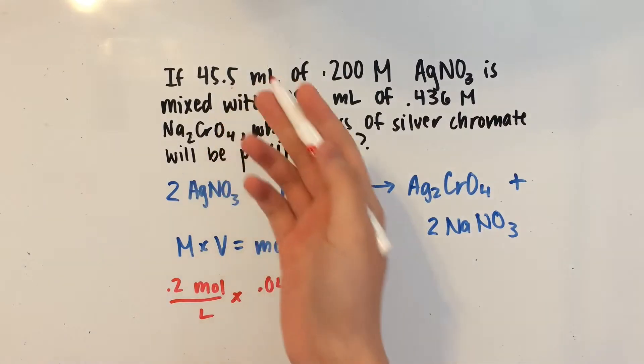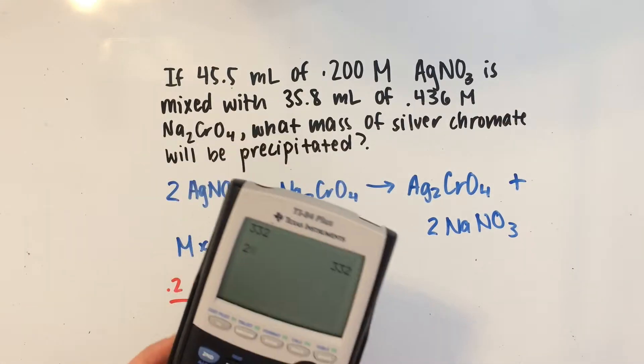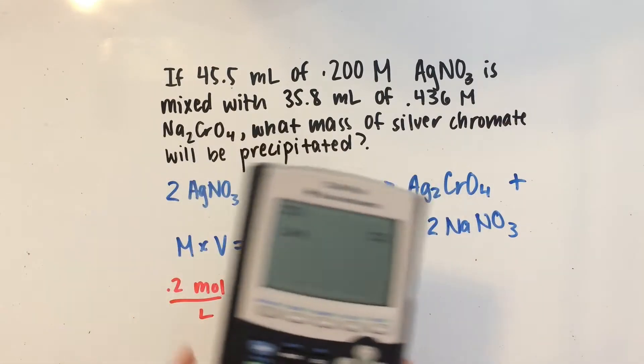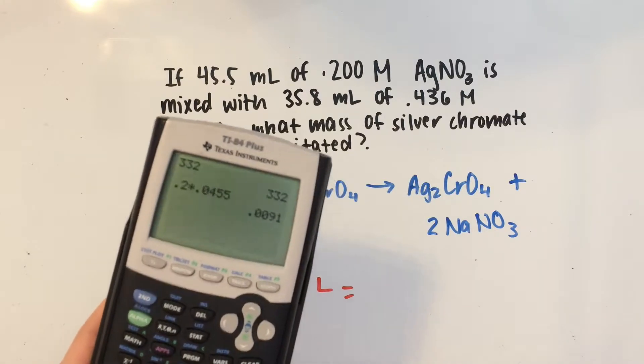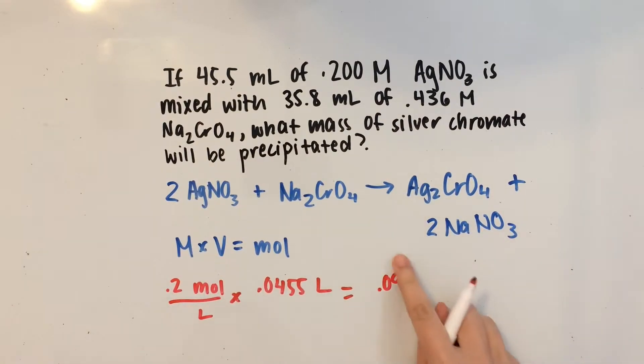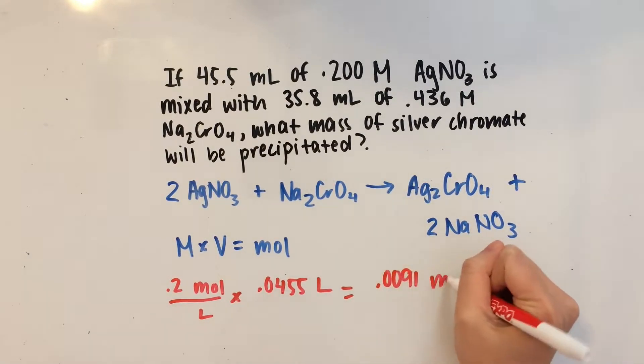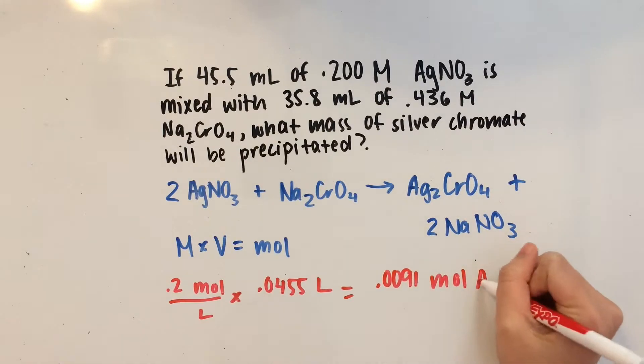And remember, I'm not writing 45.5 because that's in milliliters. So if we change that to liters, we get 0.0455. And now, let's see what that turns out to be on the calculator. 0.2 times 0.0455, and that gives us 0.0091 moles of silver nitrate.